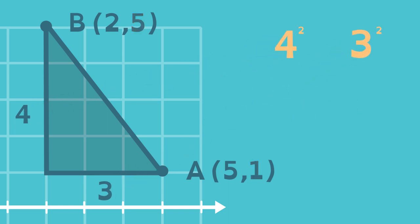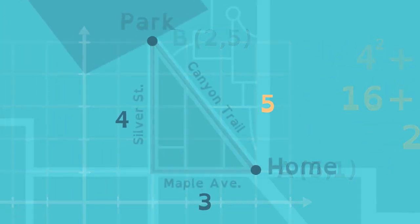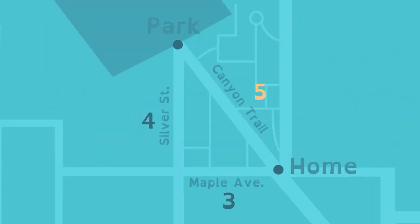Now apply the Pythagorean Theorem. 4 squared plus 3 squared is equal to 16 plus 9, which when added together equals 25. That's the same as 5 squared. Again, the length of Canyon Trail is 5 miles.